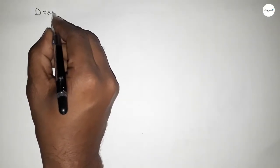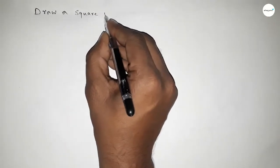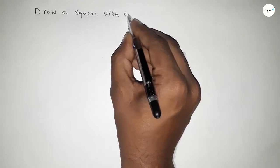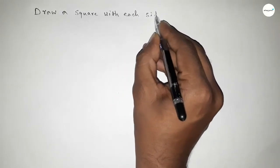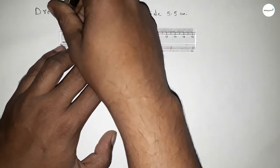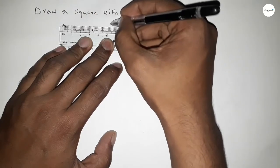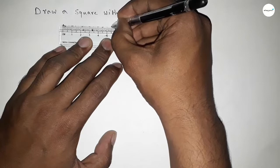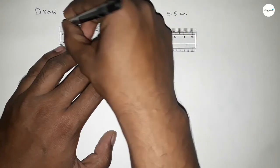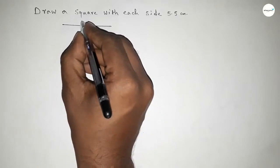Hi everyone, welcome to SSR Classes. Today in this video we have to draw a square with each side 5.5 centimeters. So let's start the video. First of all, drawing here a line of length 5.5 centimeters — this is 1, 2, 3, 4, 5 and this is 5.5 centimeters.